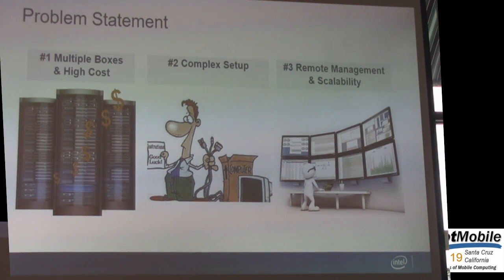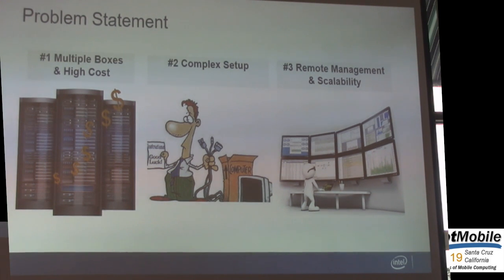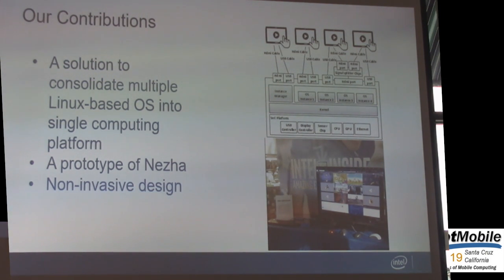Android multi-user and some virtualization technologies such as Cells can host multiple Android instances or Android profiles on a single computing platform, but their use cases are different — they are focused on one user at a time, meaning only one fully-running Android instance can be operated by the user. This cannot meet our requirement to support different users at the same time. So we present a solution to consolidate multiple active physical clients on a single computing system, based on OS virtualization technologies such as Linux namespace and cgroup. Namespace is used to isolate the OS instance on a single kernel, and cgroup limits the resources allocated to each instance.